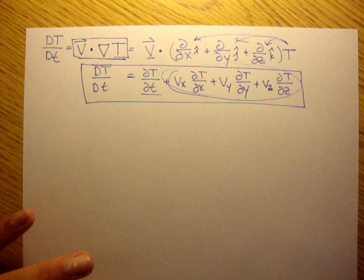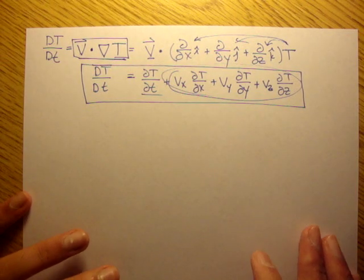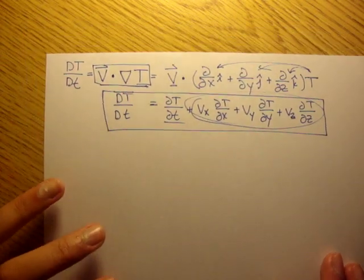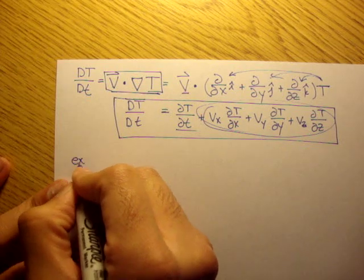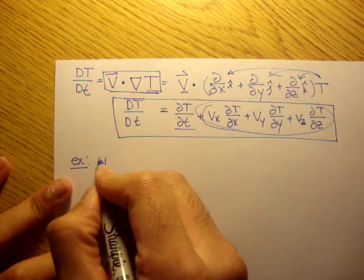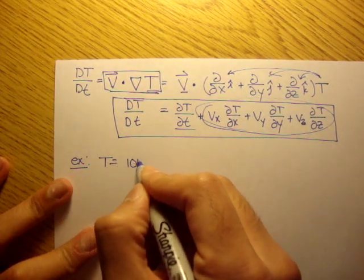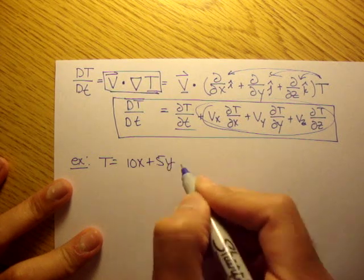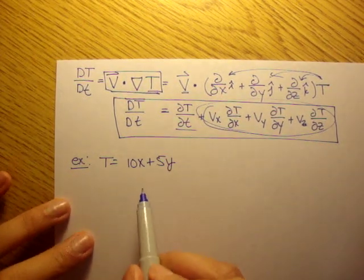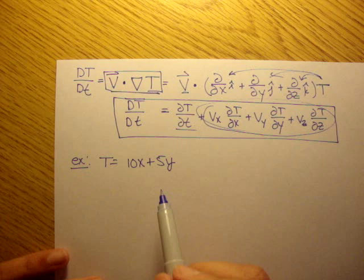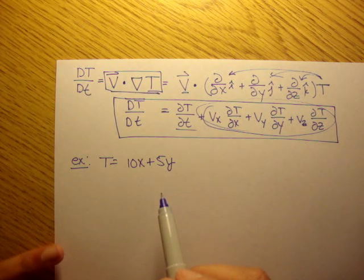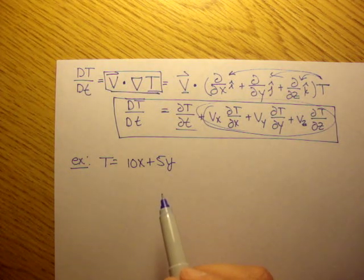The temperature distribution in a fluid is given by T equals 10x plus 5y. So, example, the temperature is given as a function of T = 10x + 5y, where x and y are the horizontal and vertical coordinates in meters, and T is in degrees centigrade.